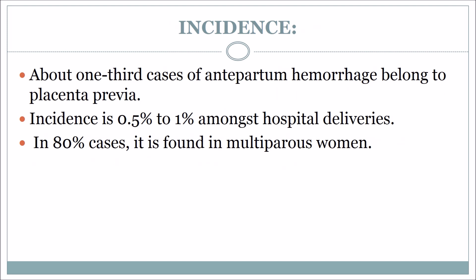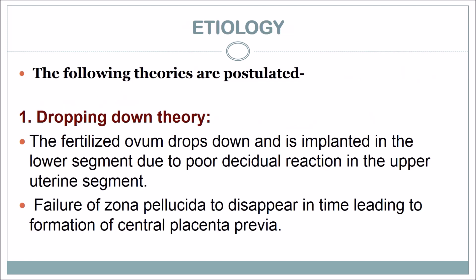Regarding incidence, about one third of cases of antepartum hemorrhage belong to placenta previa. The incidence is 0.5 to 1 percent among hospital deliveries, and in 80 percent of cases it is found in multiparous women.